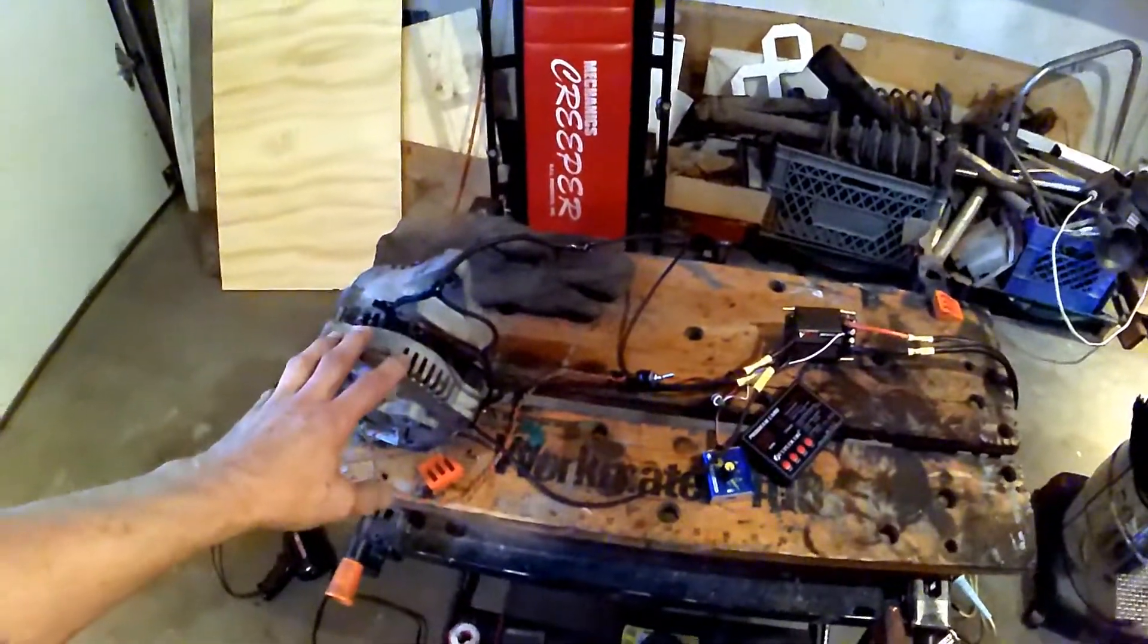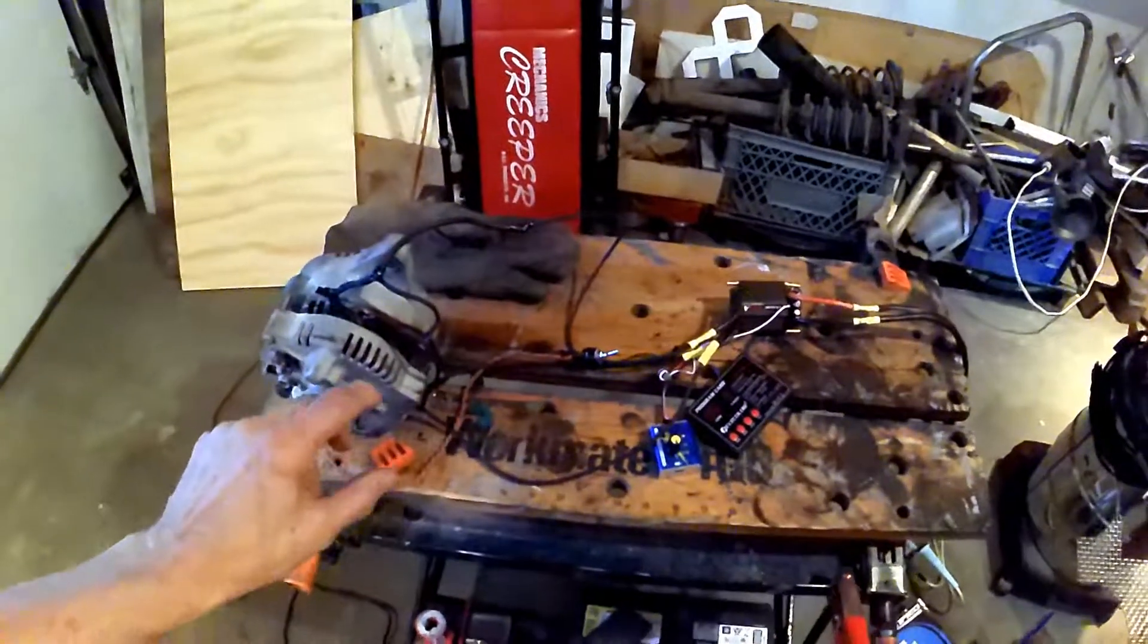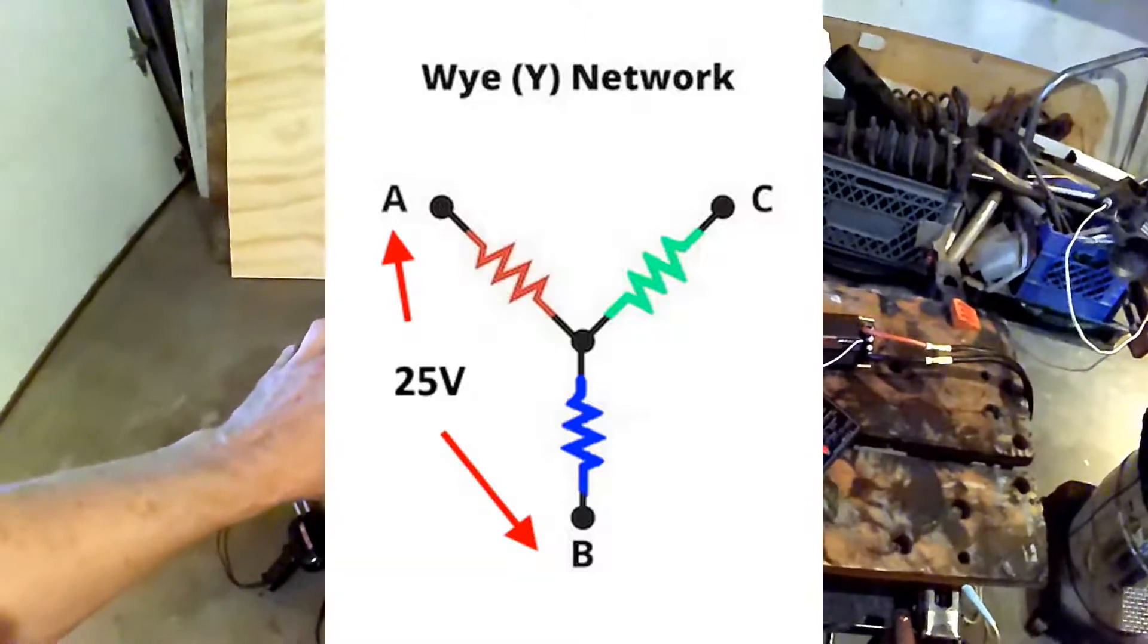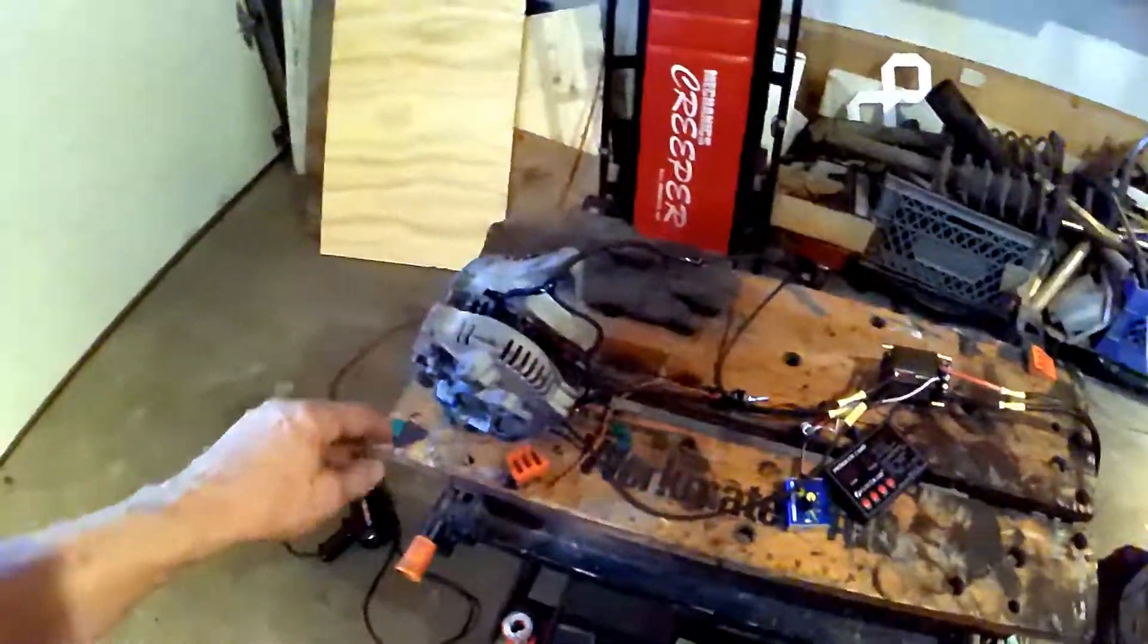When it's in a Y configuration, the 25 volts is across a series of at least two coils, so we don't get all the power possible.